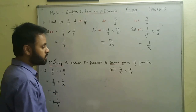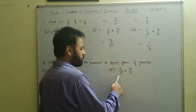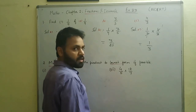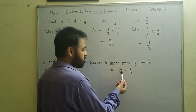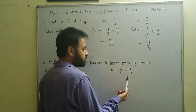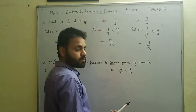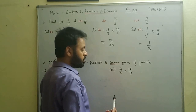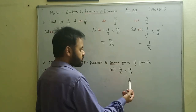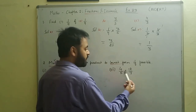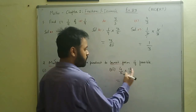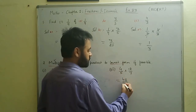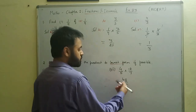Now let's do the seventh part of question two. Here we have one proper fraction and one improper fraction. Nothing can be cancelled out — four and five are not divisible, twelve and seven are not divisible, and twelve and five are not divisible. So we multiply straight away: four times twelve is forty-eight and seven times five is thirty-five, giving forty-eight by thirty-five.